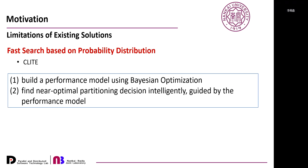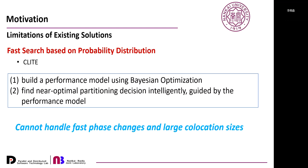The last category particularly refers to C-Lite, which we call fast search based on probability distribution. The basic idea is to build a performance model using Bayesian optimization and find near-optimal partition decisions guided by the performance model. However, this approach cannot handle fast-paced changes and large collocation sizes due to the limitations of Bayesian optimization.